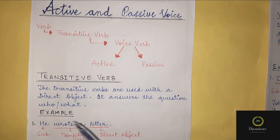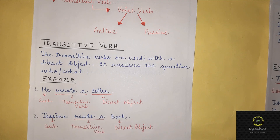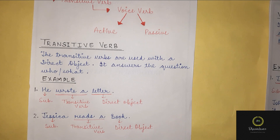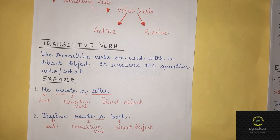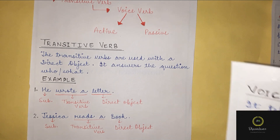Let's understand with the help of examples. 'He wrote a letter.' Here, 'he' is the subject, 'wrote' is the transitive verb, and 'a letter' is the direct object. So the transitive verb is followed by the direct object. Second example: 'Jessica reads a book.' Jessica is the subject, 'reads' is the transitive verb, and 'a book' is the direct object. So this makes it very clear what a transitive verb is.